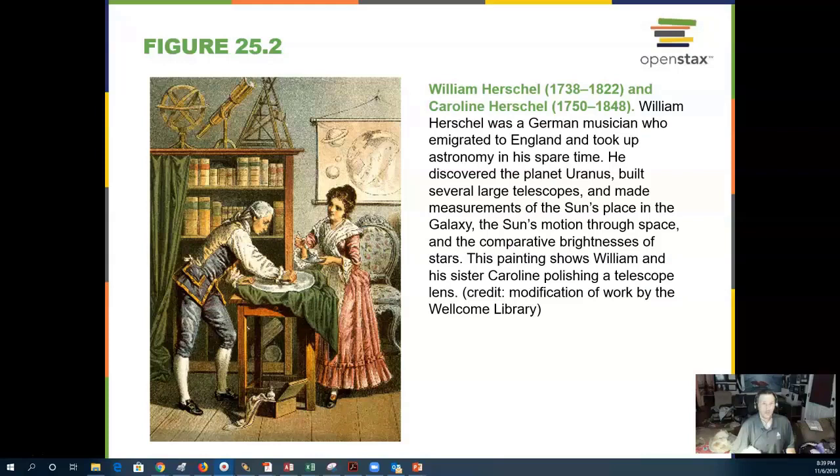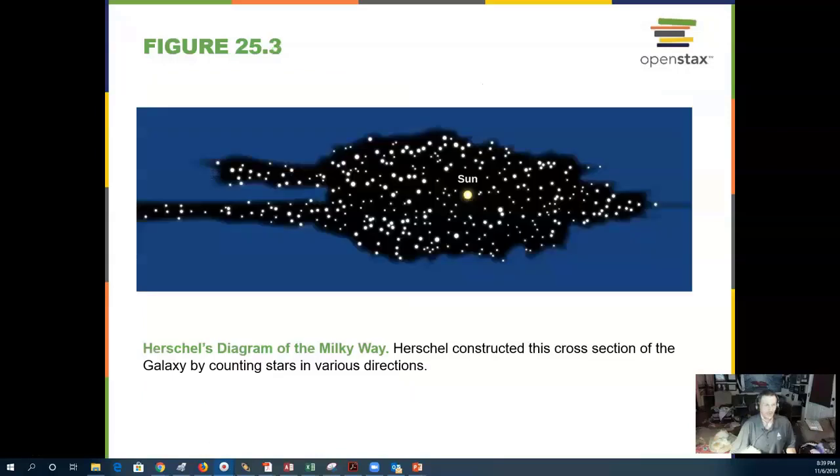William Herschel was a German musician who took up astronomy and ended up discovering the planet Uranus. He made several large telescopes and also looked at the sun's place in our galaxy. Here is his diagram of what he thought the Milky Way looked like, and he put the sun close to the middle.